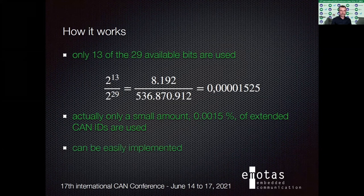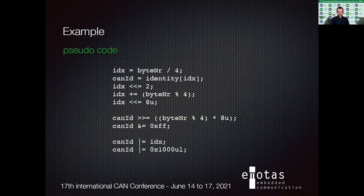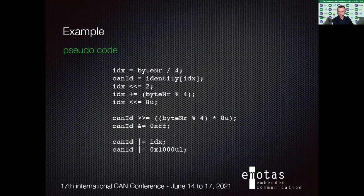Another thing — it actually sounds a little complicated, but it can easily be implemented. On the next slide I have an example of how it could be implemented with a little bit of C code. It shows how to calculate the next CAN ID for the negotiation. As you can see, it's not that much code, and with today's microcontroller technology this is nothing for the microcontroller — it's not even a waste of resources.